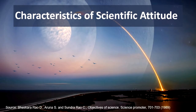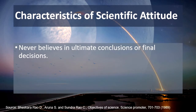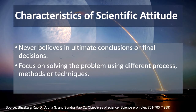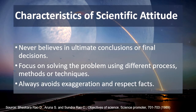A person with scientific attitude never believes in ultimate conclusions or final decisions, because science is tentative in nature — it never comes out with any absolute or final solution. It keeps changing with new observations and new findings. So a person with scientific attitude focuses on solving problems using different process methods and techniques, always avoids exaggeration, and always respects facts. These characteristics were highlighted by Bhaskar D. Rao and his colleagues in a paper in Science Promoter.